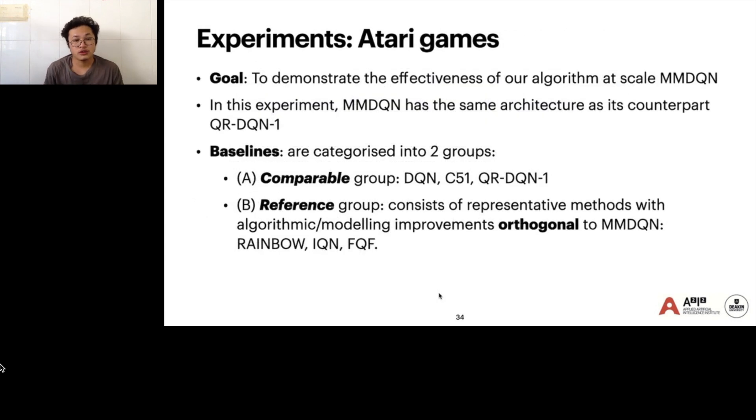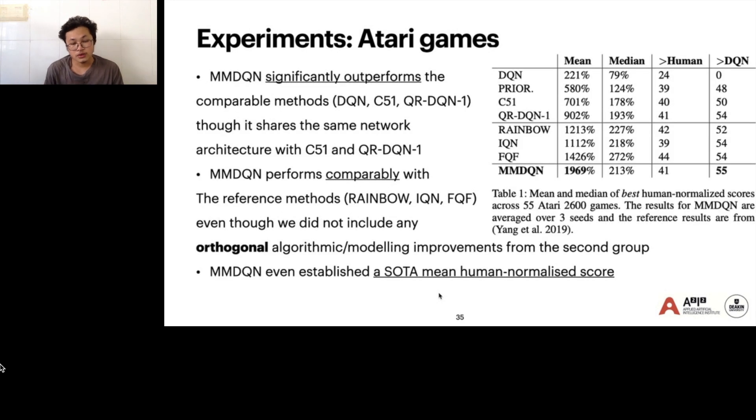Now we move to large-scale experiments with Atari games. The goal is to demonstrate the effectiveness and scalability of our algorithm. In this experiment, we used a very simple architecture. MMDQN has the same architecture as its counterpart, QRDQN. The baselines are categorized into two groups. The first group we call comparable group with DQN, C51, QRDQN. The second group we call reference group consists of representative methods with algorithmic and model improvements to MMDQN, consisting of Rainbow, IQN, and FQF.